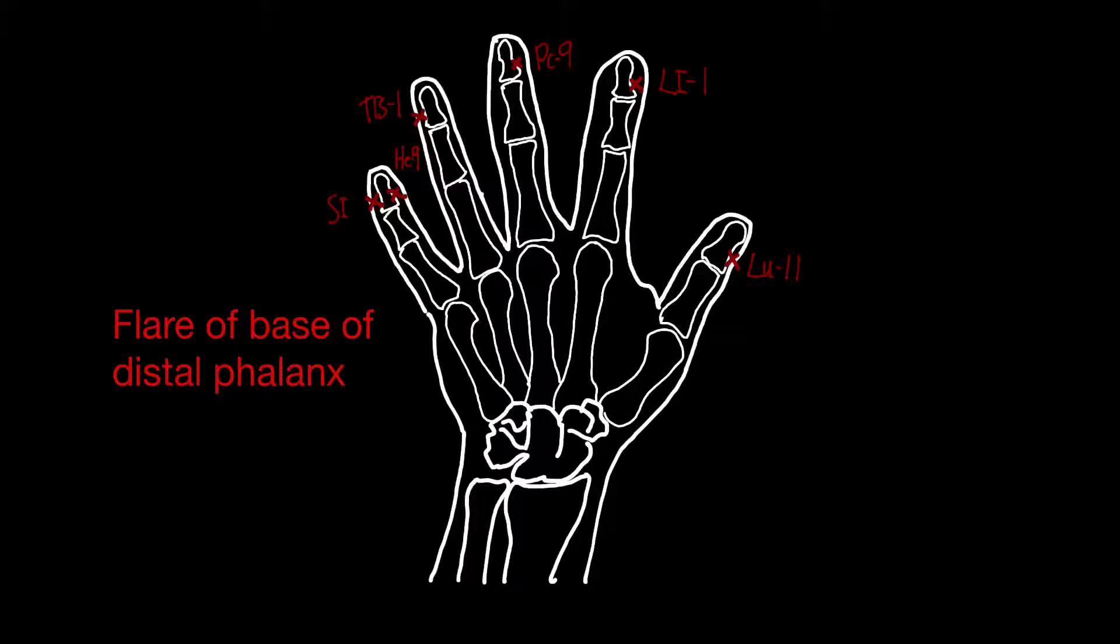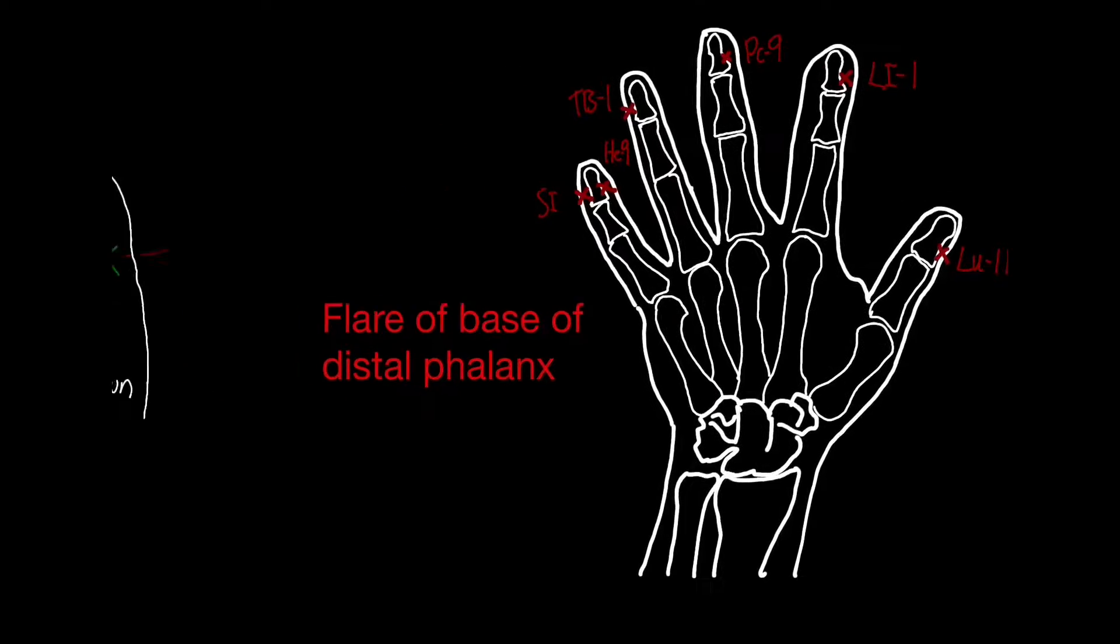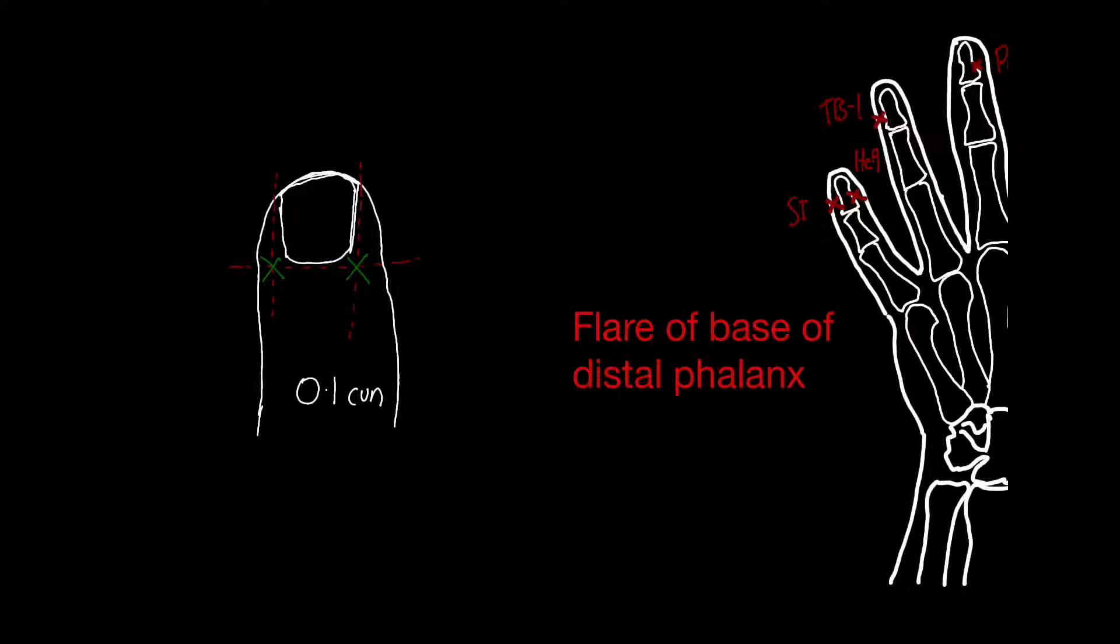You can also find them by drawing a vertical and a horizontal line outlining the nail, and the intersection of these two lines is where the nail points are. It's about 0.1 sun from the nail itself.